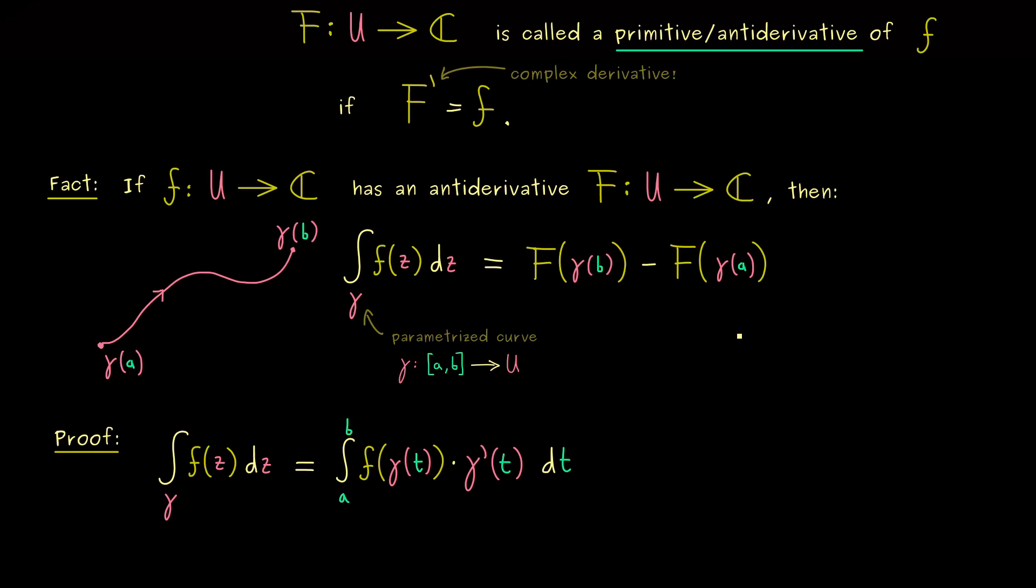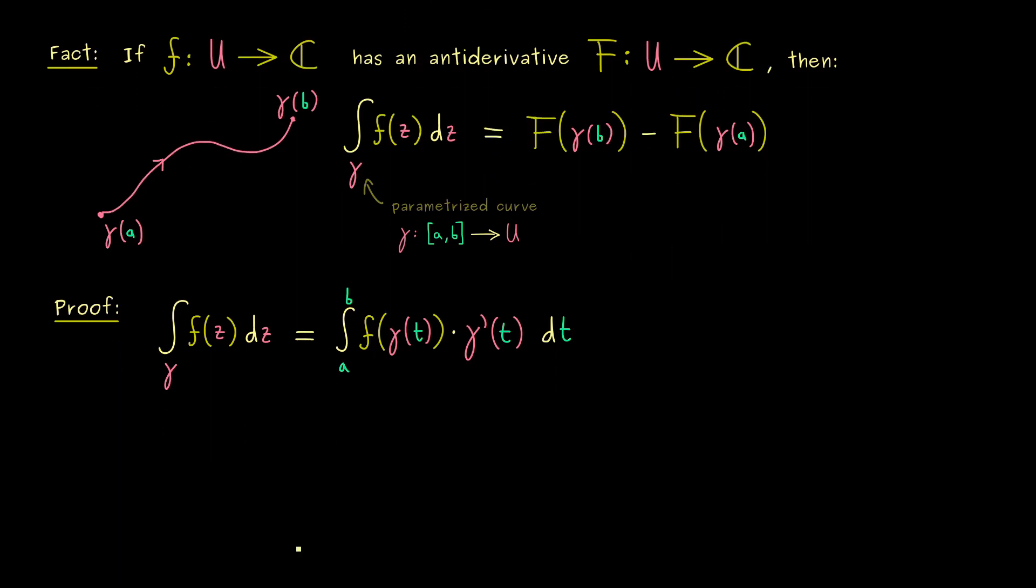And of course the important fact we want to use here is the fundamental theorem of calculus. Because this one connects integrals with anti-derivatives. However before we apply this first as a side note I can ask you what is the derivative of the anti-derivative F in composition with gamma. I write d dt for our derivative because then we can use our parameter t. Now when you see this then you should know of course it's a composition so we can use the chain rule.